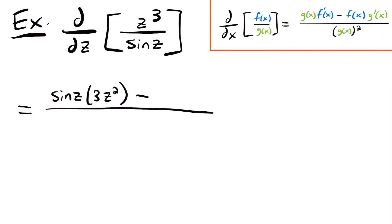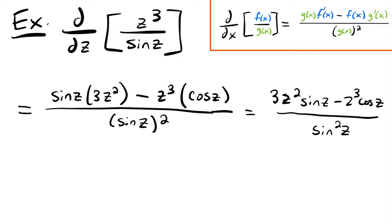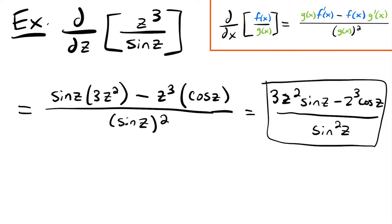The derivative of z cubed will be 3 times z squared. Then we will subtract that top function, which will be z cubed, times the derivative of the bottom, which is the derivative of sine z, which in this case is going to be cosine z, because the derivative of sine is cosine. So when we do the quotient rule, you start with your denominator, multiply it by the derivative of the top, and then you subtract your top multiplied by the derivative of the denominator. Then you divide by your denominator squared, which would be sine z squared. This is going to be equal to 3z squared sine z minus z cubed cosine z divided by sine squared z, and that is our final answer — the derivative of z cubed divided by sine z.